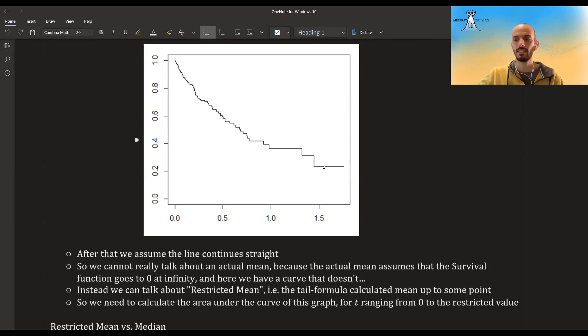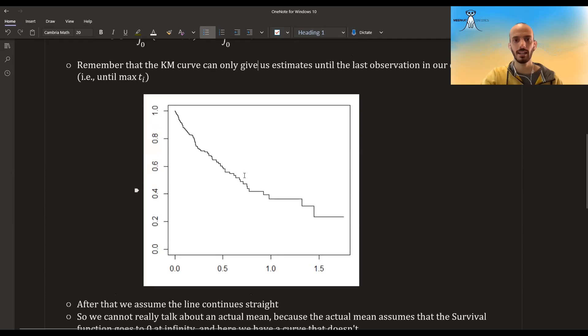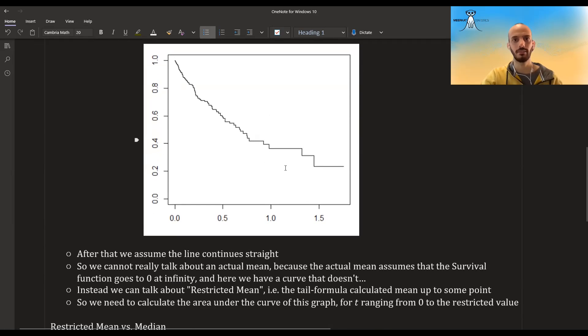In the infinite, the survival function has to go down to zero in order for it to be a valid distribution, a valid survival function. So with Kaplan-Meier, we cannot really talk about the true mean. We cannot talk about taking the area under this curve, the integral up to infinity, because we don't know what's going on after this point.